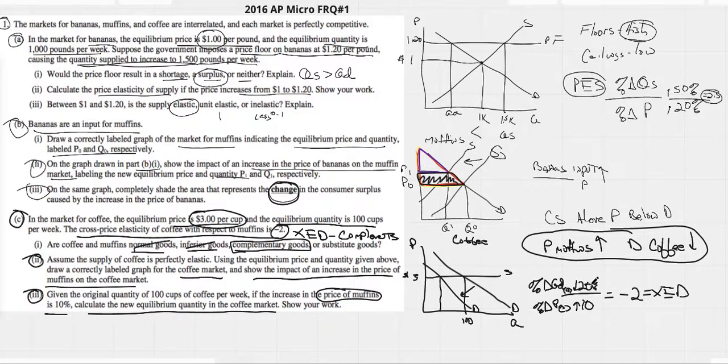So, 10 goes into 2 twice. Negative. Easy enough. So, we need a 20% decrease. If our quantity demand right now is at 100, a 20% decrease would be 20% less, which would drop us down to 80 as our quantity demand at a price once our demand curve shifts there.